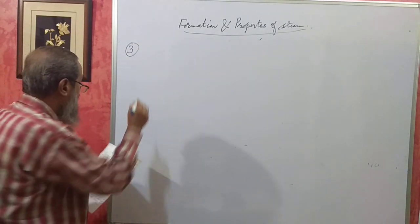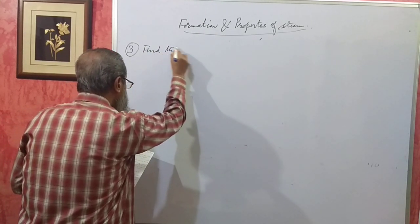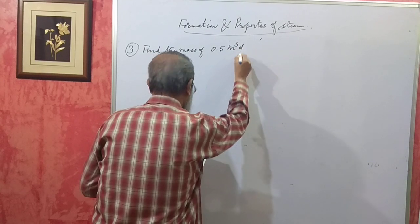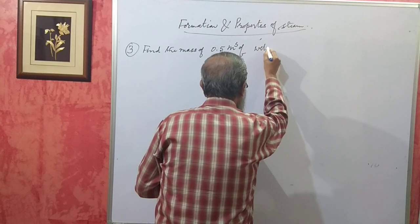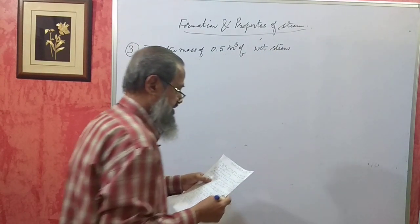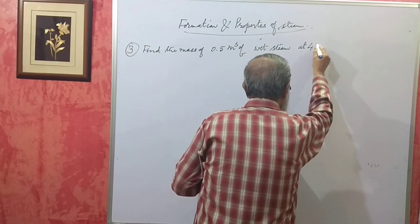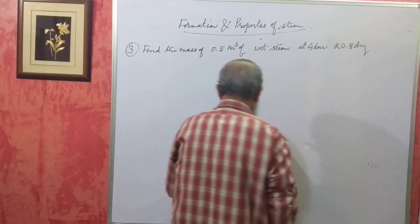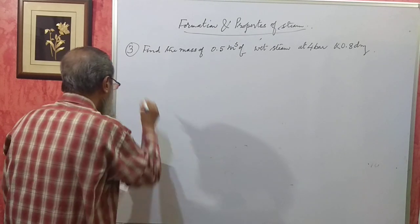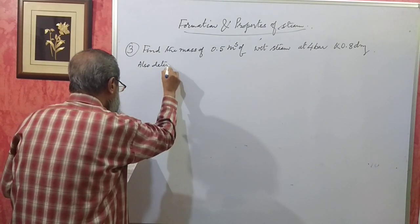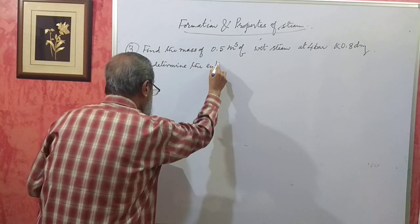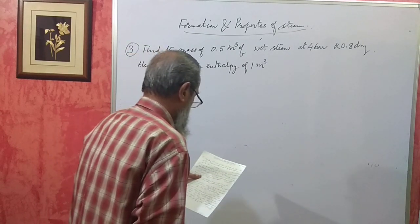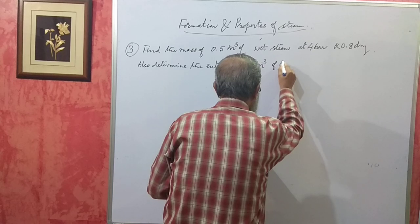Problem 3 says: find the mass of 0.5 cubic meters of wet steam at 4 bar and 0.8 dry (80% dry). Also determine the enthalpy of 1 cubic meter of this steam.